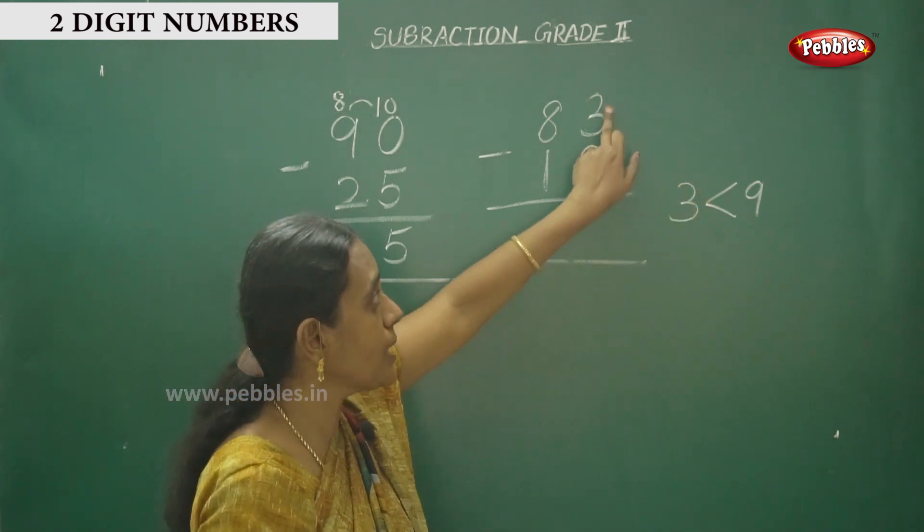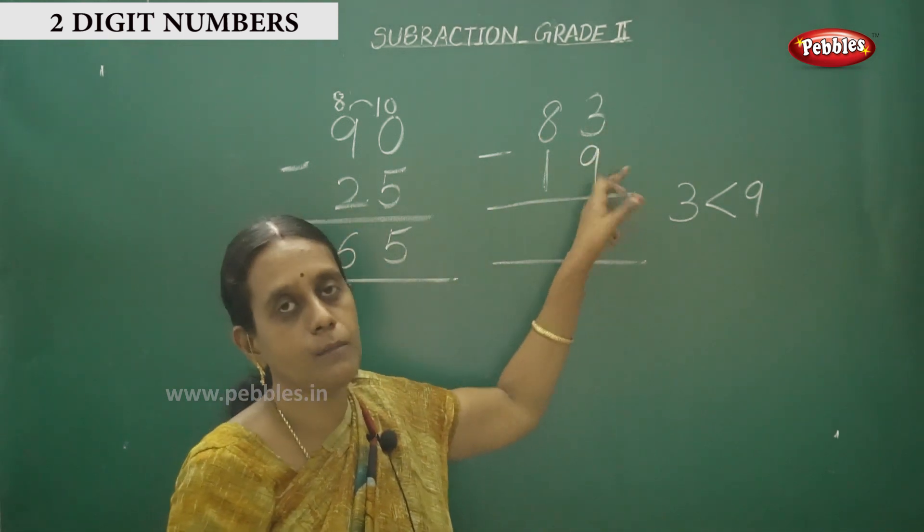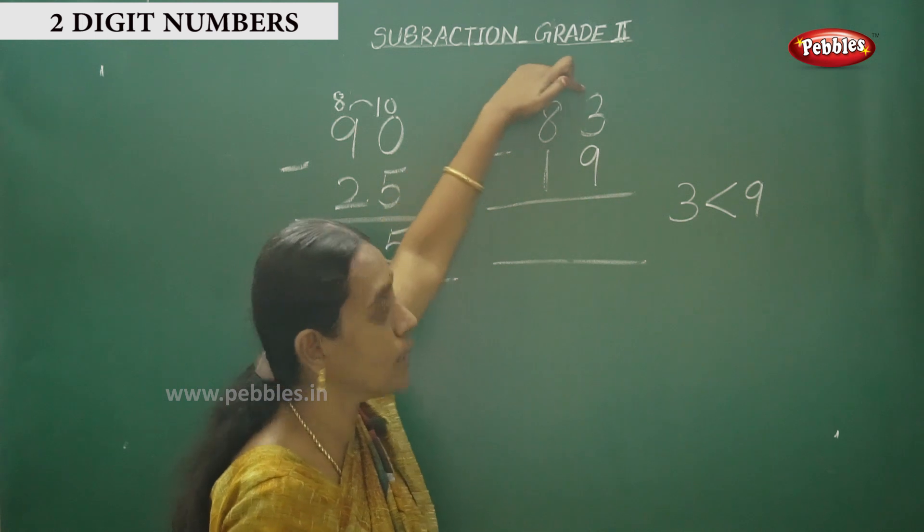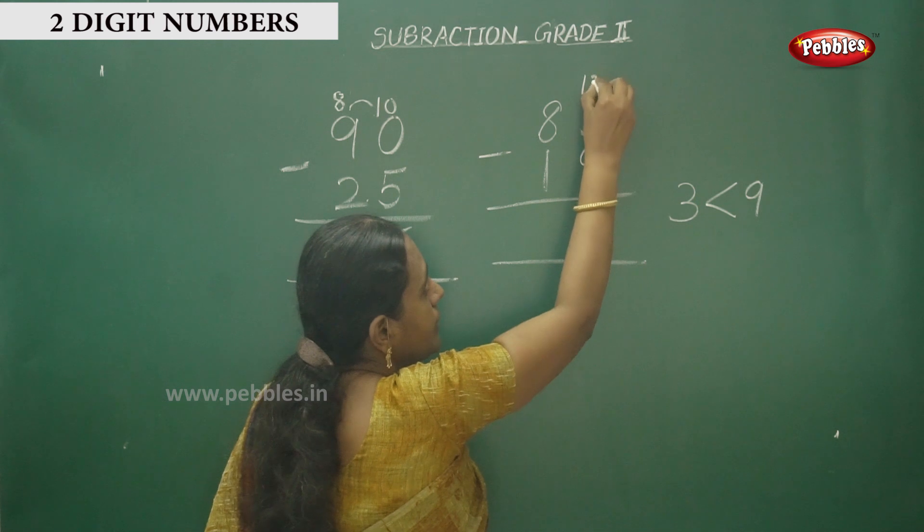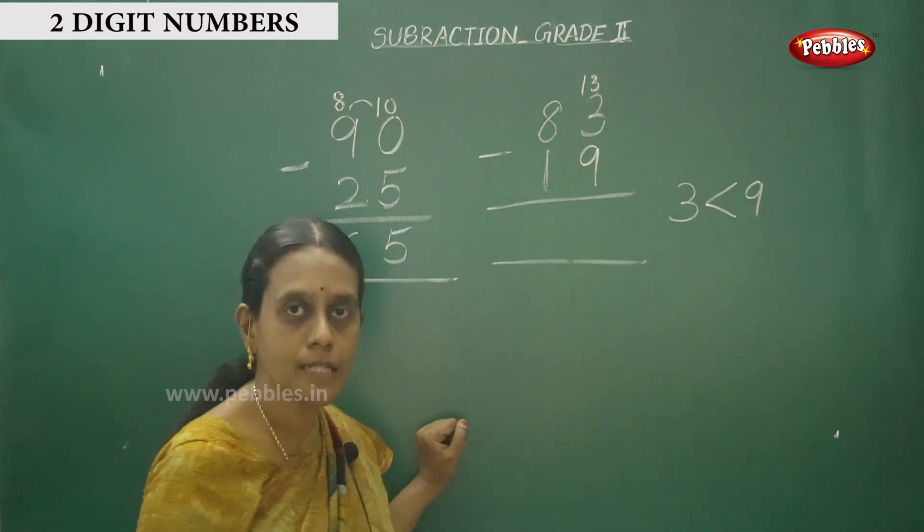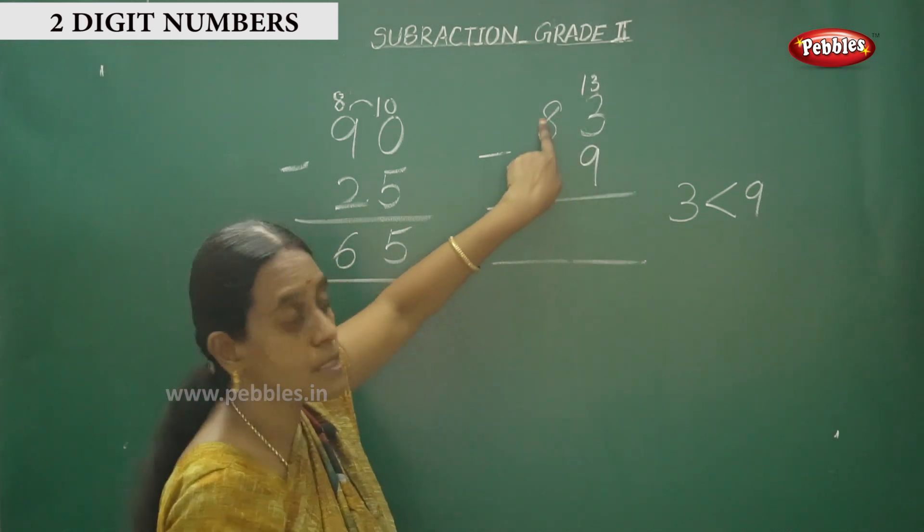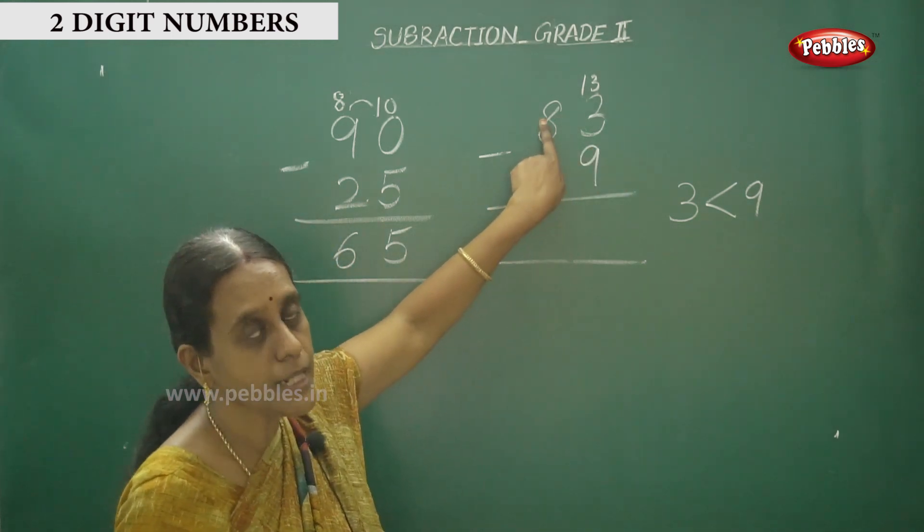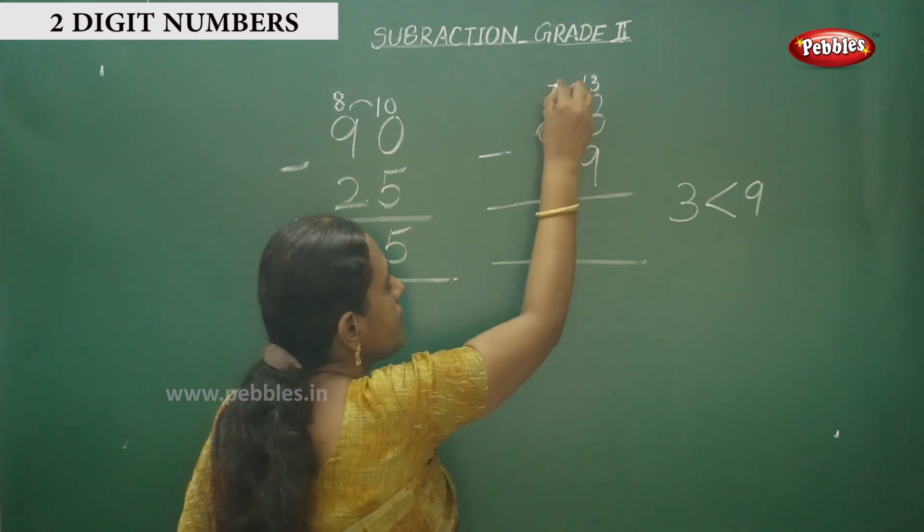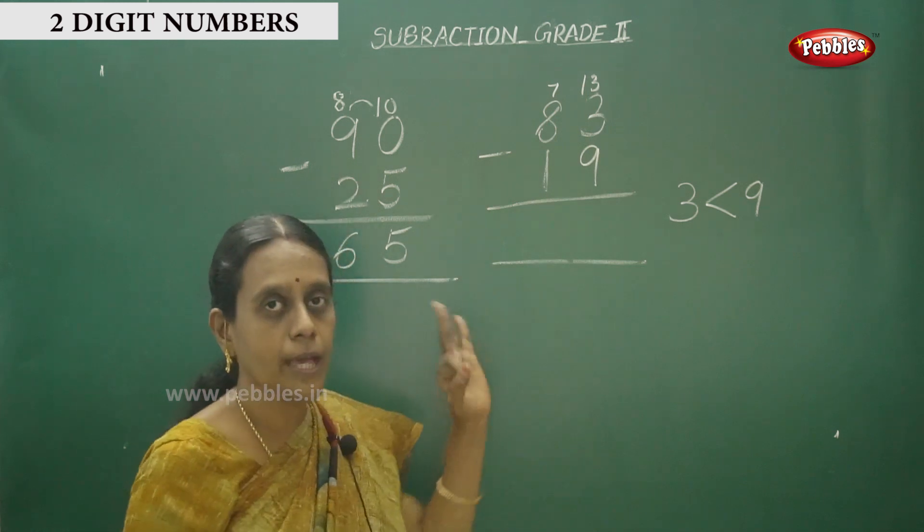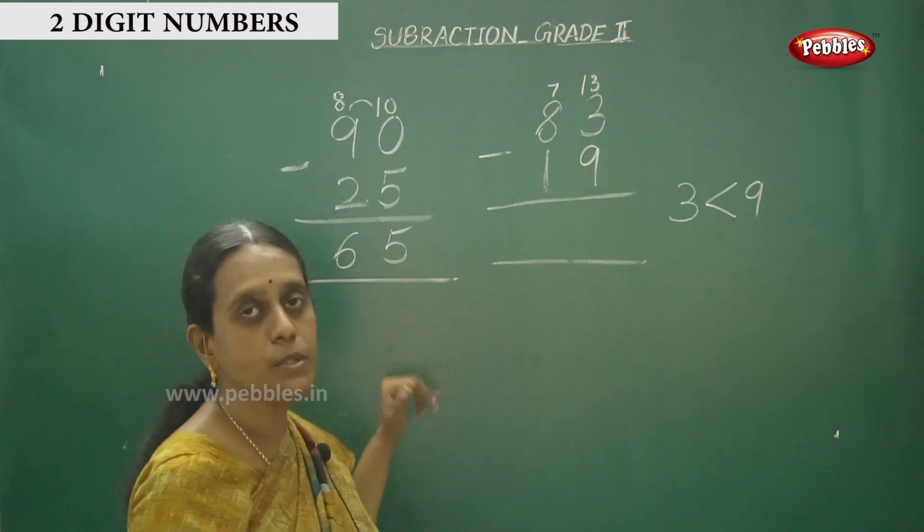So you can't subtract. This is less than 9. It will become a negative number if we subtract before number. So we have to borrow one number. So this is 8, one number taken, so it becomes 7. Now we have to subtract.